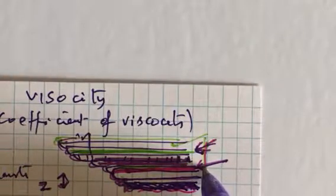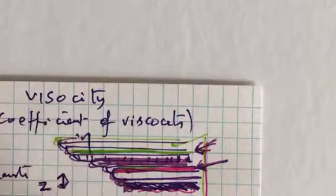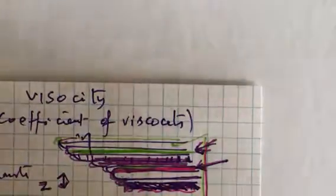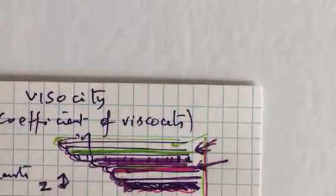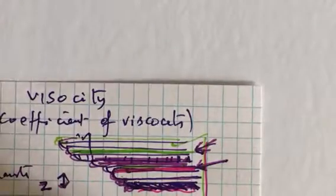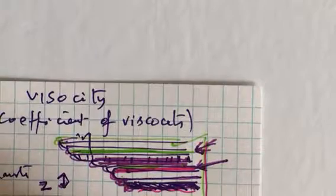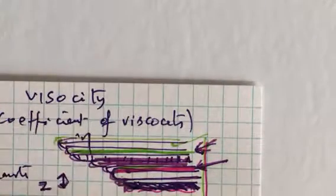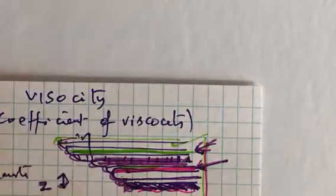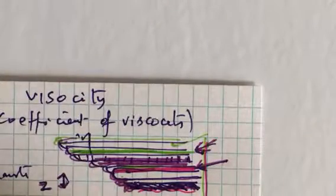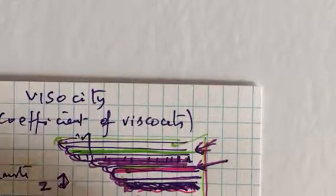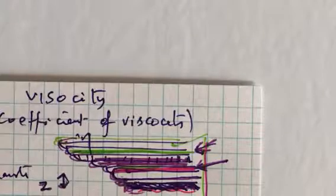Now the force required to maintain the flow of a liquid, to overcome the opposition to the flow, you require a kind of force to maintain the flow. This force is directly proportional to the velocity gradient. This force also required to maintain the flow is proportional to area of contact. More is the area of contact, you require more push.